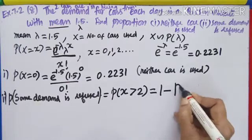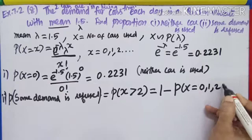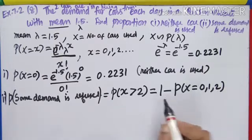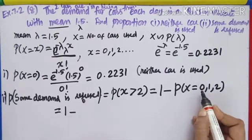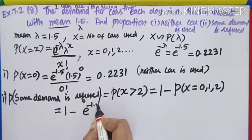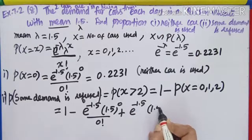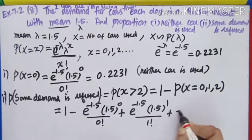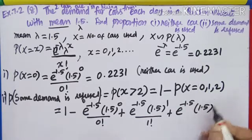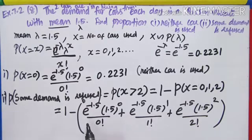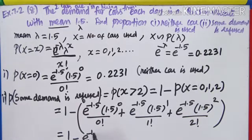How to find P(X > 2)? Using the complement: 1 − P(X = 0, 1, 2). Whatever I don't want, I subtract from one. So: 1 − [e^(−1.5)·1.5^0/0! + e^(−1.5)·1.5^1/1! + e^(−1.5)·1.5^2/2!]. We have substituted for x = 0, 1, 2 separately.